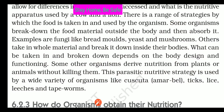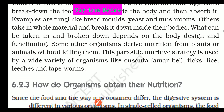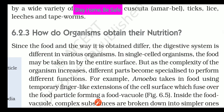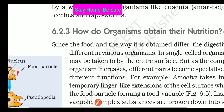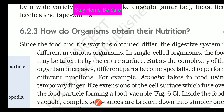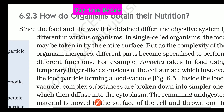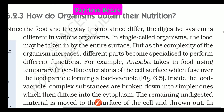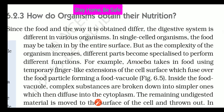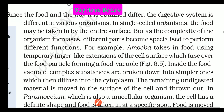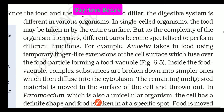These are the different types of heterotrophic nutrition. Now let's talk about how organisms obtain their nutrients. Since the food and the way it is obtained differ, the digestive system is different in various organisms. In different organisms, the digestive system is different.